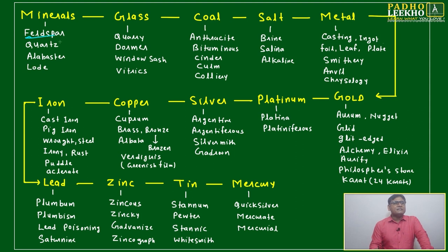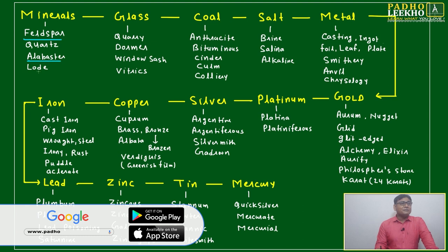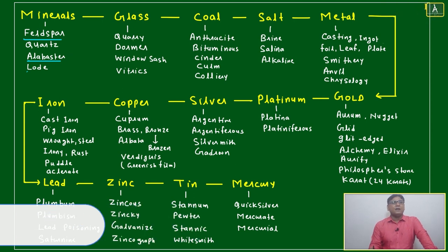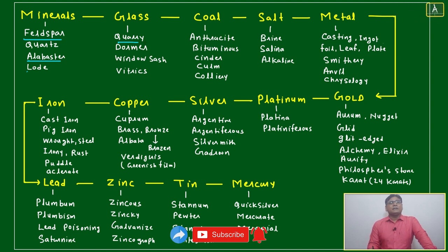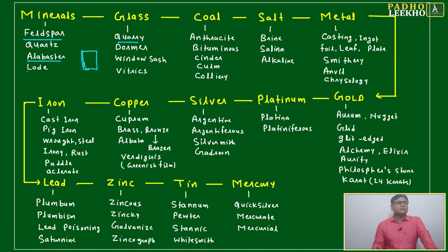Myndels — another name is feldspar, or we can say quartz or alabaster. All these are derived names related to glass. Try to remember: alabaster, feldspar — all are names associated with window glass. If you see the word 'quarry' anywhere, it is related to glass.